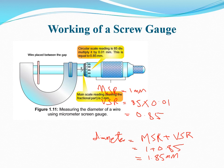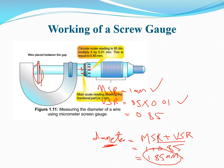To summarize the screw gauge reading: first, observe the main scale reading — in this case 1 mm. Then find the circular scale reading by identifying which division — here the 85th — is coinciding with the index line, and multiply by the least count to get 0.85 mm. The final diameter is obtained by adding main scale and circular scale readings: 1.85 mm as the diameter of the wire.